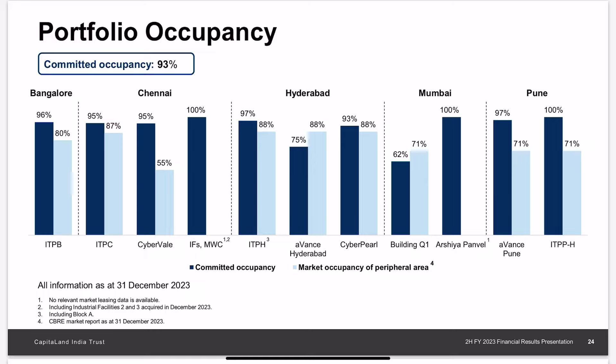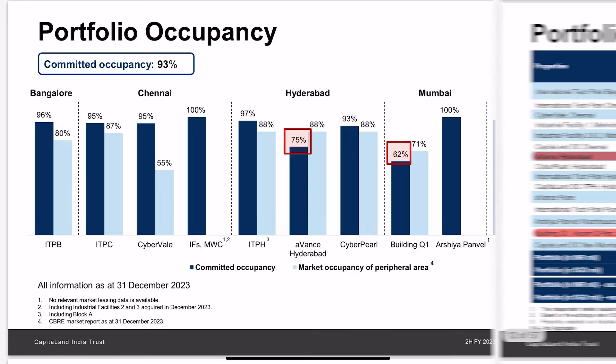On occupancy, they are doing fine overall, with only two properties performing badly at 75 percent and 62 percent. One building may be a concern as it represents 10 percent of the overall portfolio, while the Mumbai property is a much smaller concern at only 2.5 percent of overall assets. Therefore, bad performance of the larger asset will definitely affect CapitaLand India Trust more.